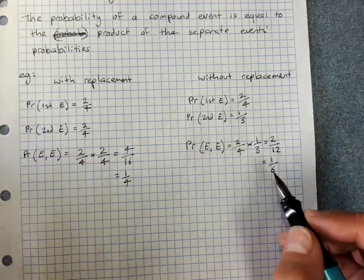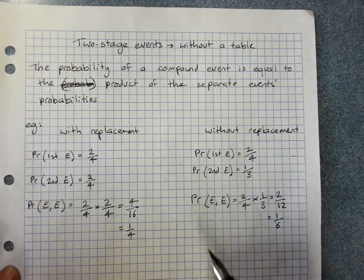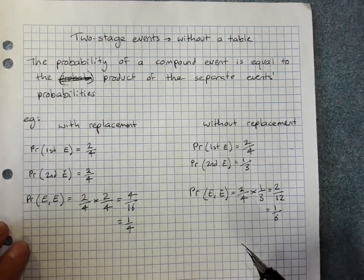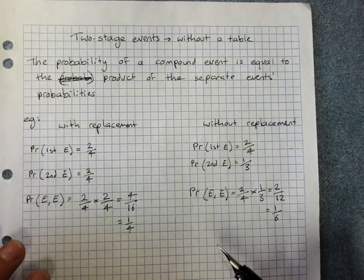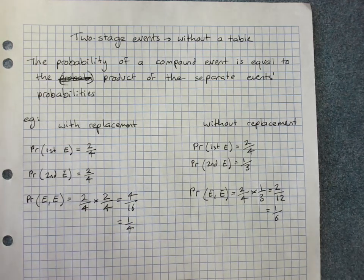So you do not actually need the table to work out the number of outcomes or the probabilities. But you do need to be able to make the table and it will help if you're at all stuck.